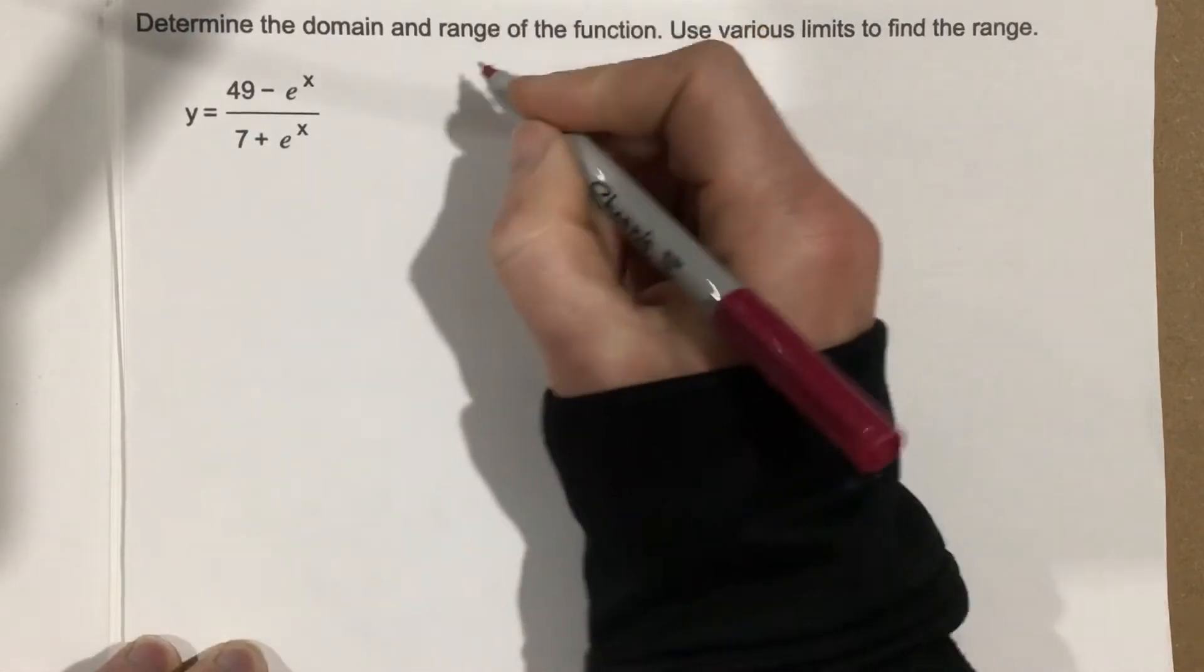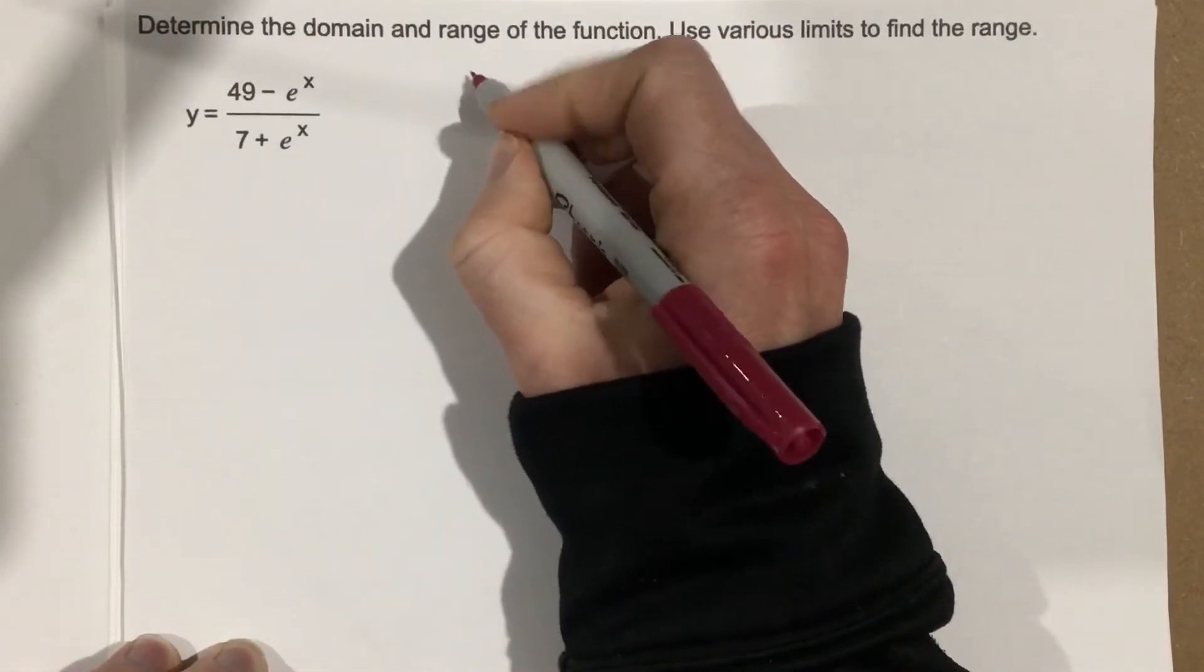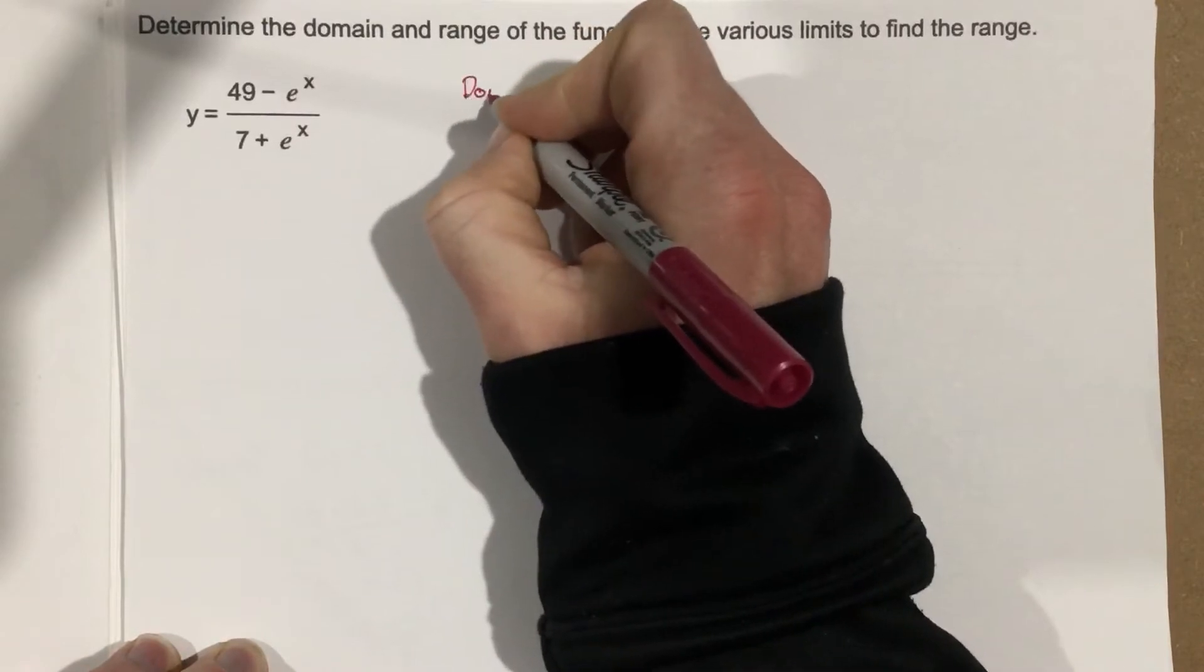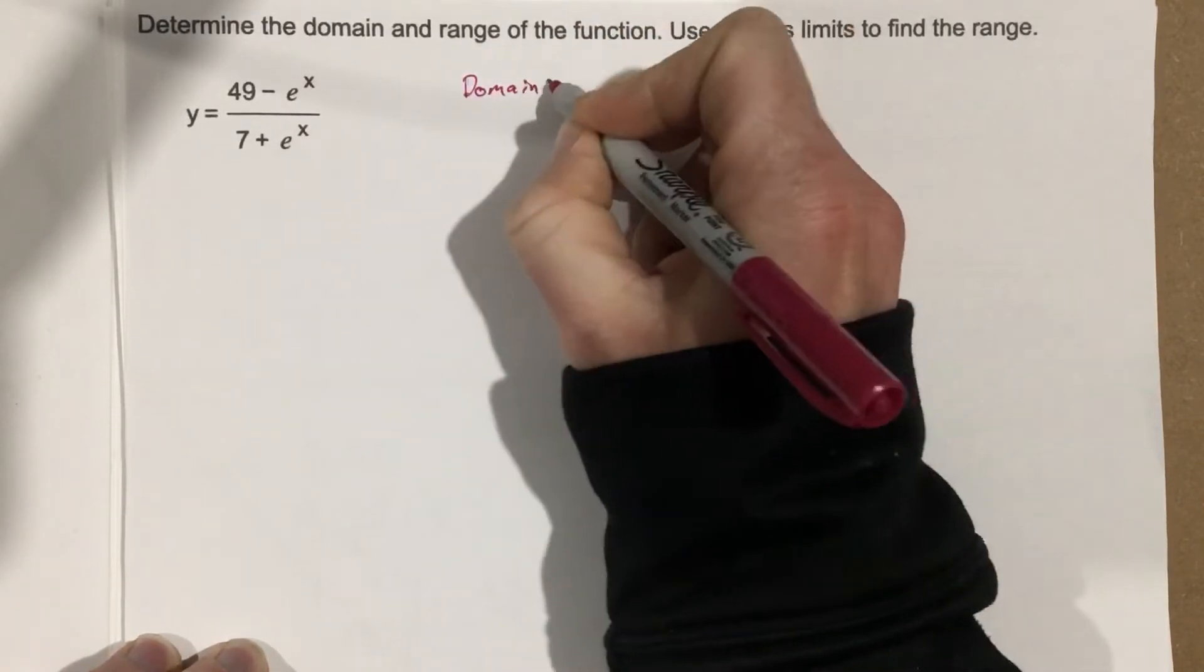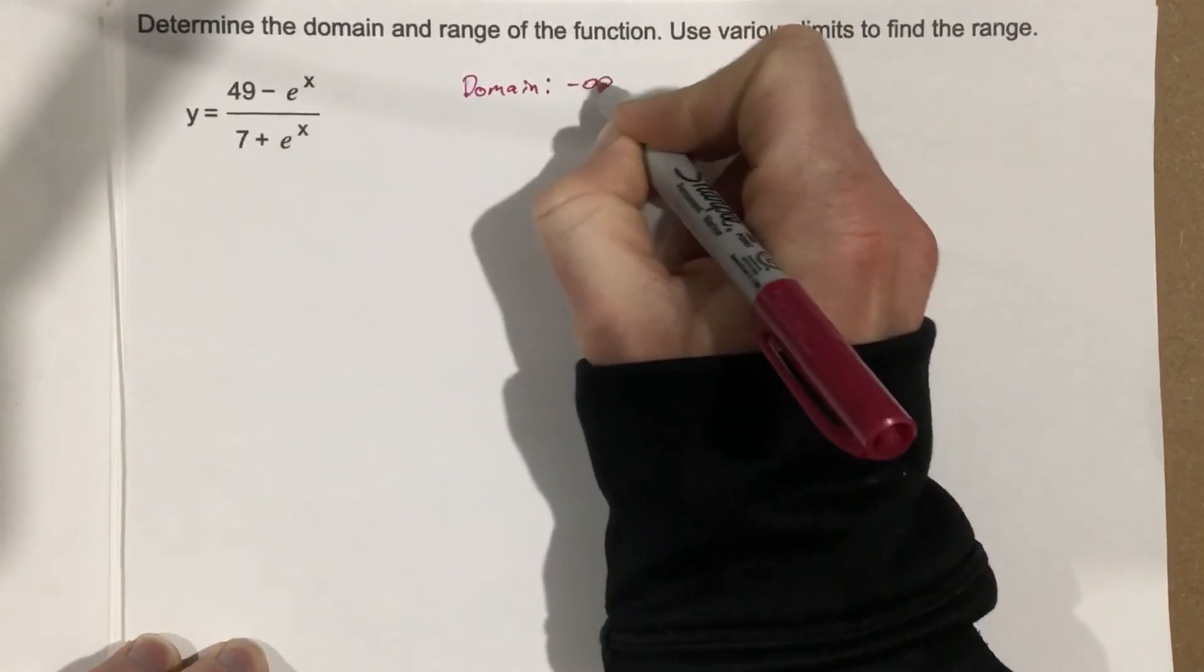So we can say that the domain of this, the domain of the function, is going to be negative infinity to infinity.